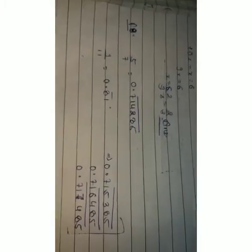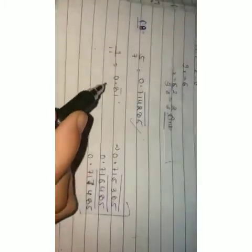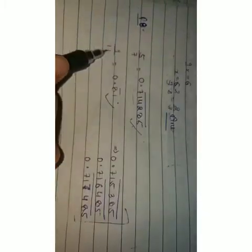Question 8: find three irrational numbers between the rational numbers 5/7 and 9/11. First we convert them to decimal form: 5/7 = 0.714285... and 9/11 = 0.81... Then we write three irrational numbers lying between these two decimal values. There are infinitely many such numbers, so you can write any valid ones.